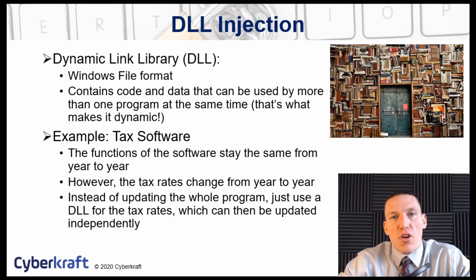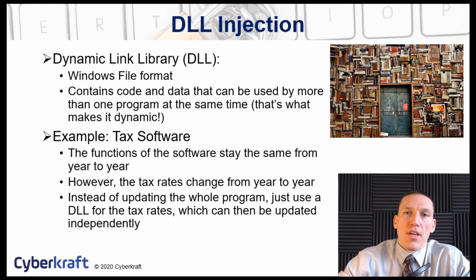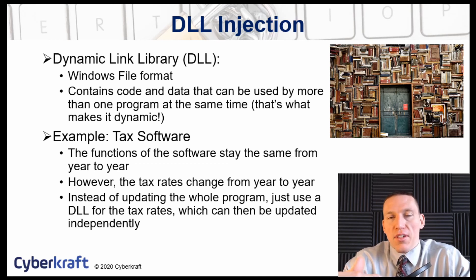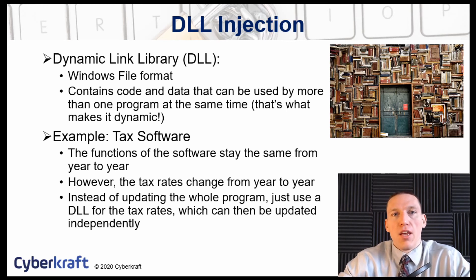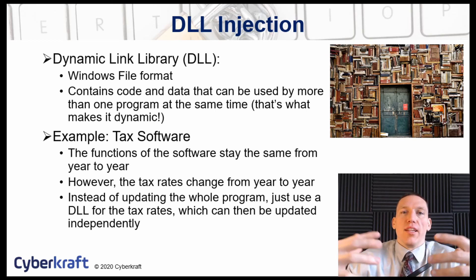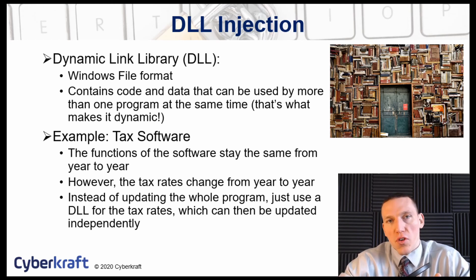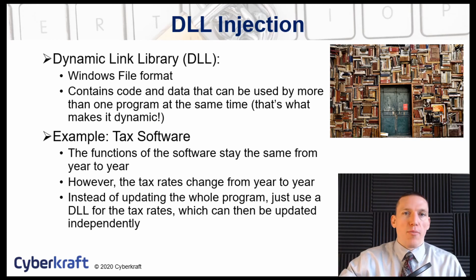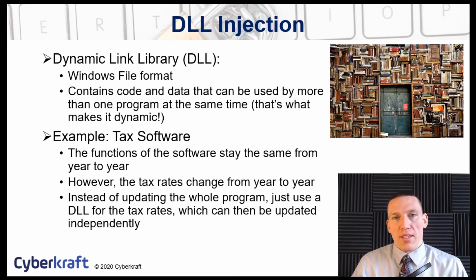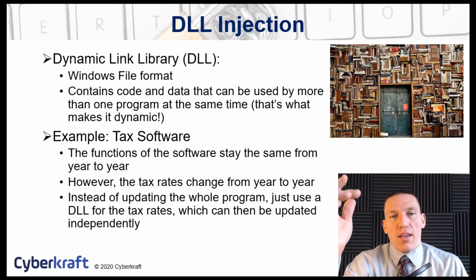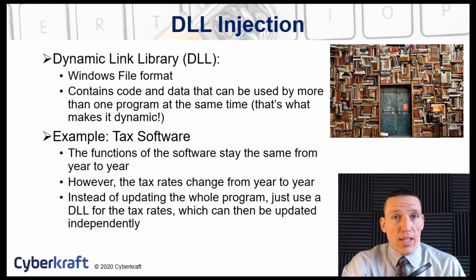With tax software, the core functionality shouldn't change year to year — you still add numbers, subtract percentages, and input deductions. What changes is the tax law itself. So instead of a full software update, the tax software can point to a server and download a new DLL every year. You could be using a 2016 version in 2020, but you're just downloading a new dynamic link library.